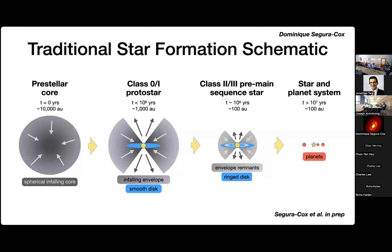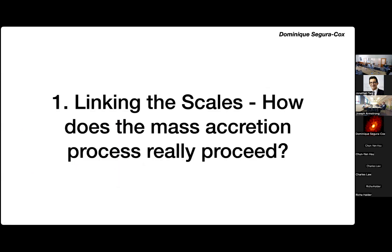That summarizes the traditional star formation schematic: you start from a pre-stellar core, stuff collapses, there's a bit of rotation, you form a protostellar disk — originally thought to be smooth. At some point substructure forms somehow, and then planets form. We're most sure of that last step because we exist.